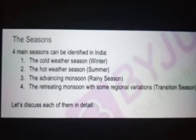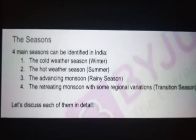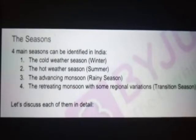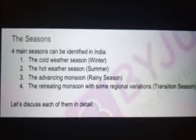The season is divided into 4 types. Four main seasons can be identified in India. First, the cold winter season. Second, the hot weather season, called summer. Third, the advancing monsoon, called the rainy season. And fourth, the retreating monsoon with some regional variation, called the transition season. Let's discuss each of them in detail.